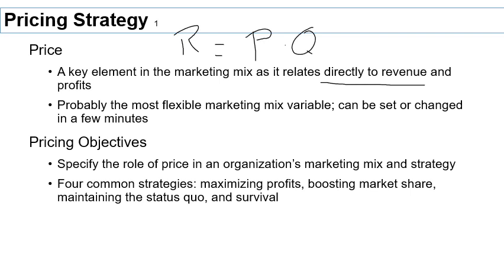Notice that this equation is more complicated than it seems. If you raise your price, two things happen: your price goes up, but that quantity Q — which is units sold — is also a function of price. As you increase your price, your quantity is going to go down. So it's not directly obvious what will happen to revenue when you increase price. That's why selecting the optimal price is a tricky business — if it were simply 'more I charge, more I make,' everybody would know how to price. Pricing is tricky and extremely powerful.